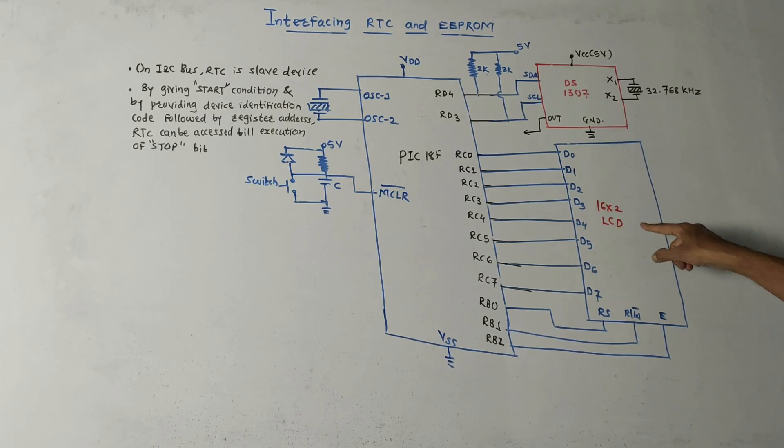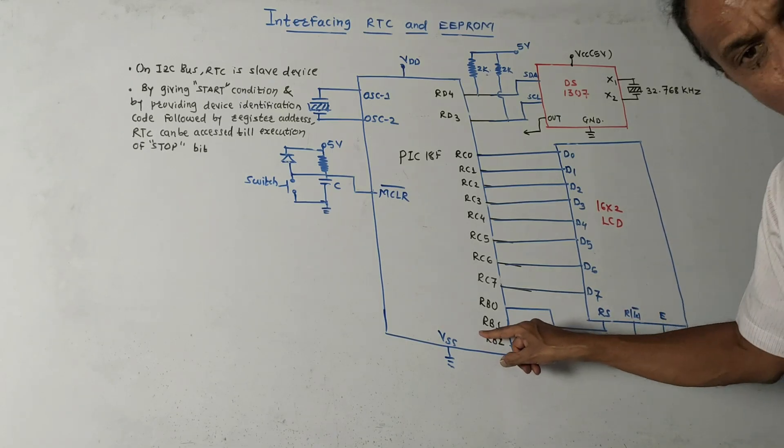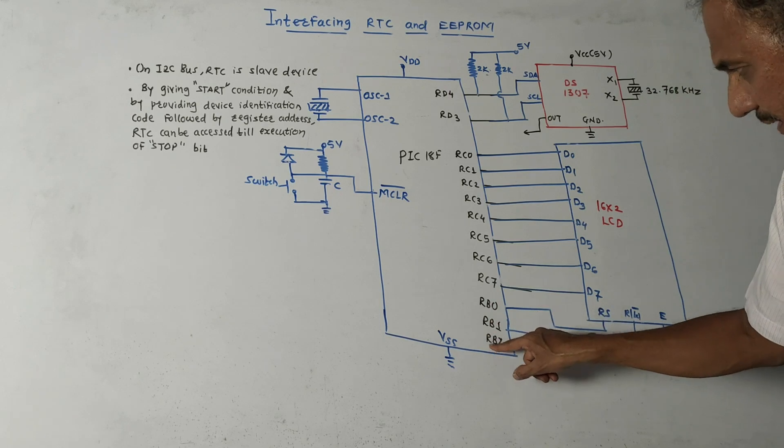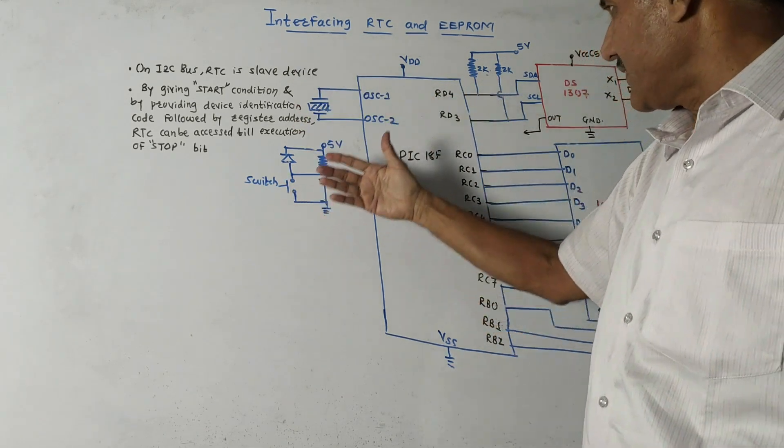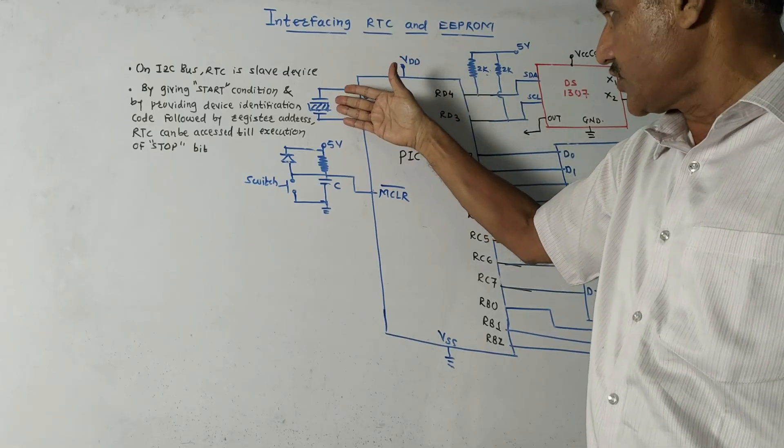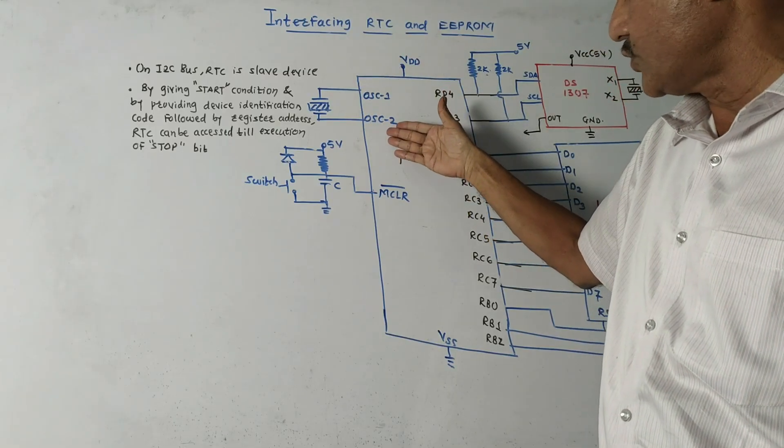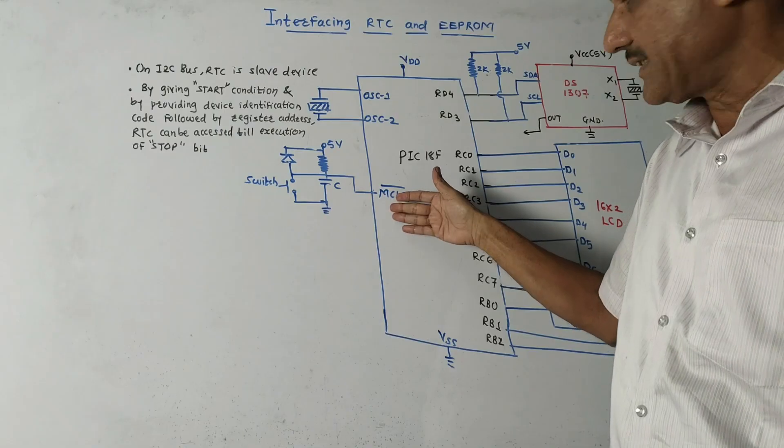The RS, read/write pin, and enable pin are connected to port B pins RB0, RB1, and RB2. We have to connect crystal source between OSC1 and OSC2 terminals and this is master clear or reset terminal.